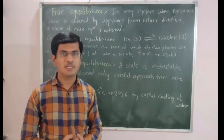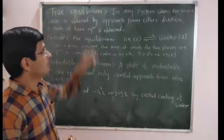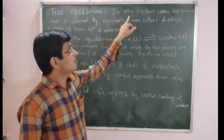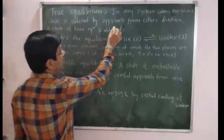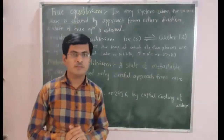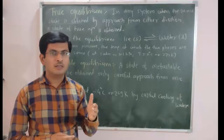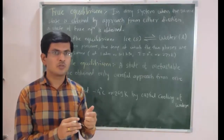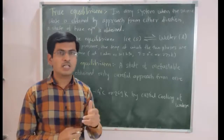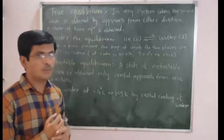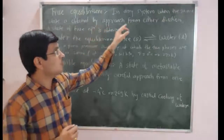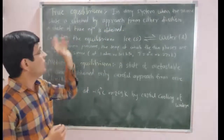Here we discuss two important points: true equilibrium and metastable equilibrium. True equilibrium is when the same state is obtained by approach from either direction — that is, from right to left or left to right. When the same state is obtained from either direction, it is called a state of true equilibrium.